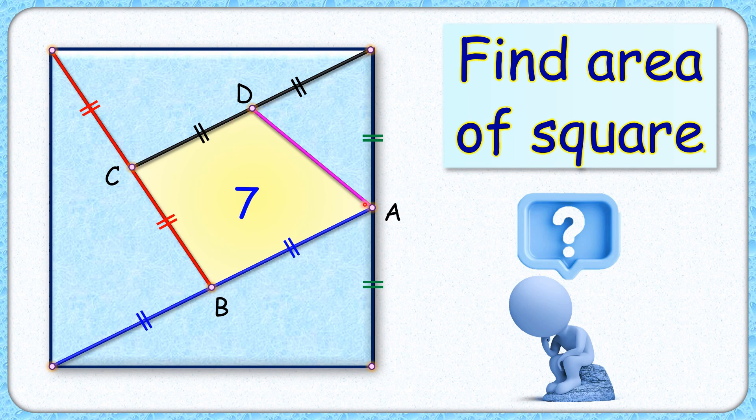Given is the area of this yellow shaded region at 7 cm square. With this limited data we have to find the area of the full square.